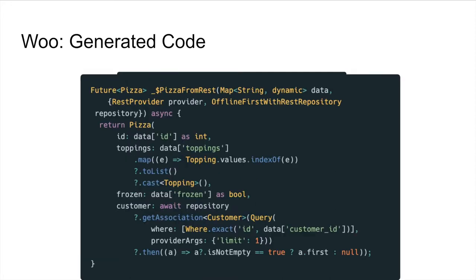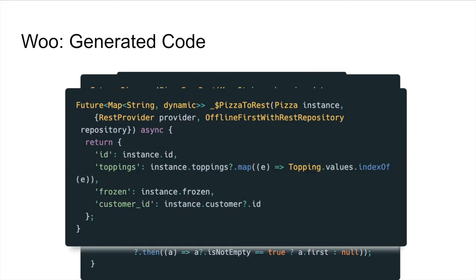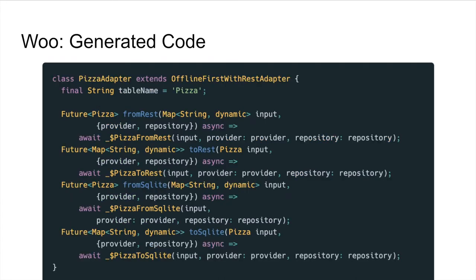BRIC also handles every other provider associated in this domain. So if we're using connect offline first with REST, this is what it looks like from REST, and this is what it looks like when we're serializing to REST. Generally we handle all the methods to and from in a domain to different providers, so the adapter can really translate everything. None of this is handwritten — all this is generated code that's immediately available to you out of the box from installing BRIC.